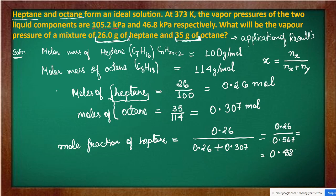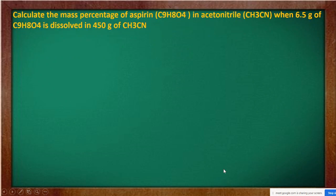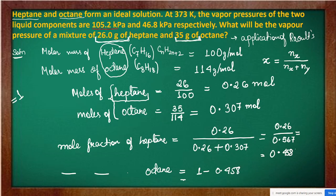The mole fraction of heptane is 0.458. Remember that the sum of all mole fractions in any solution equals 1. So the mole fraction of octane will be 1 minus 0.458, which equals 0.542.